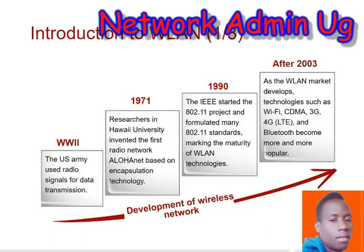We are looking at wireless local area networks. After the introduction we shall be able to see the various categories and define the introductions much more deeply. Wireless local area networks first appeared in World War II — this is a question also asked in the certification: which year were wireless network technologies first developed? It was first seen within World War II when the US Army used radio signals for transmission.